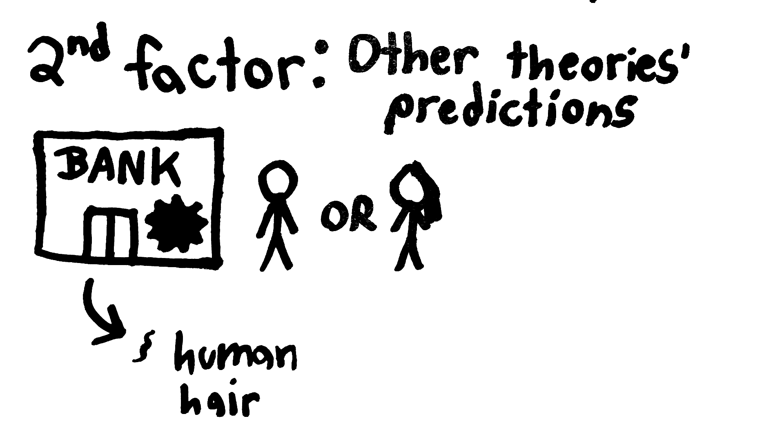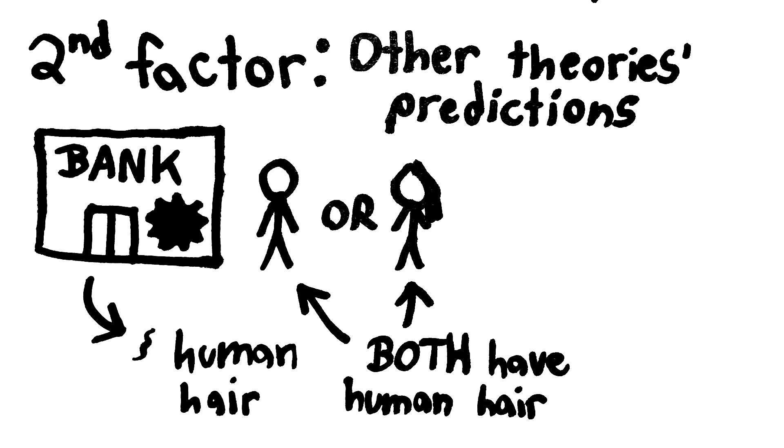However, Bob is also a human with hair, so the theory that Bob robbed the bank just as strongly predicts that there would be human hair at the crime scene. The fact that there is human hair at the crime scene on its own shouldn't affect our credences about whether Alice or Bob robbed the bank,